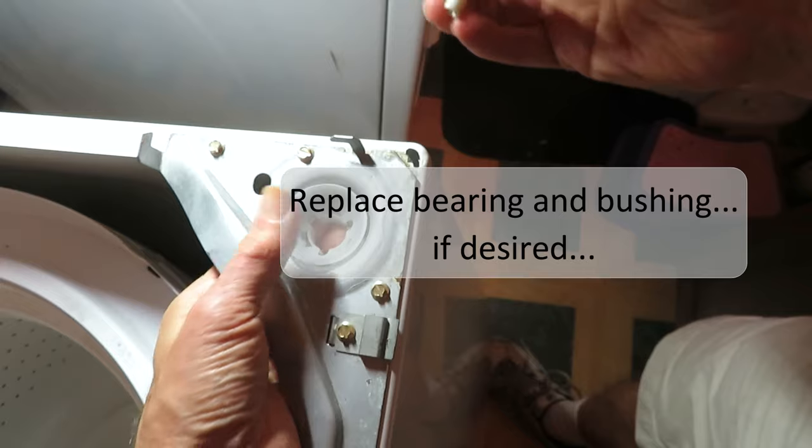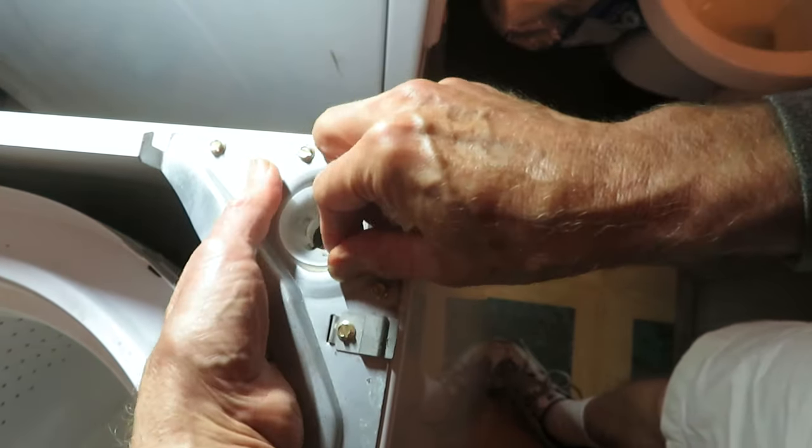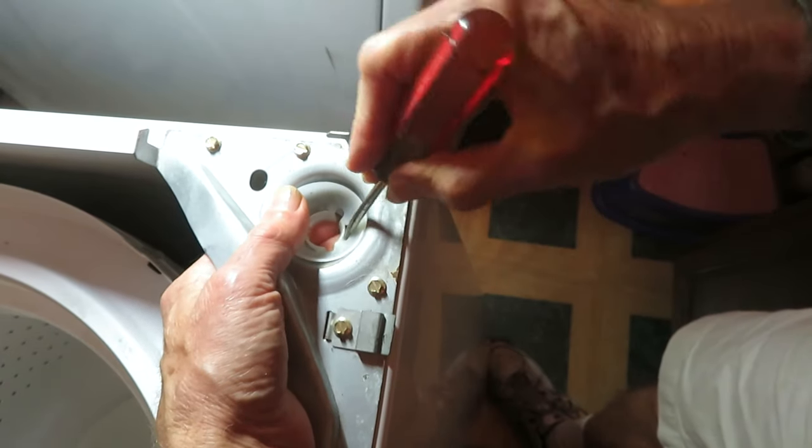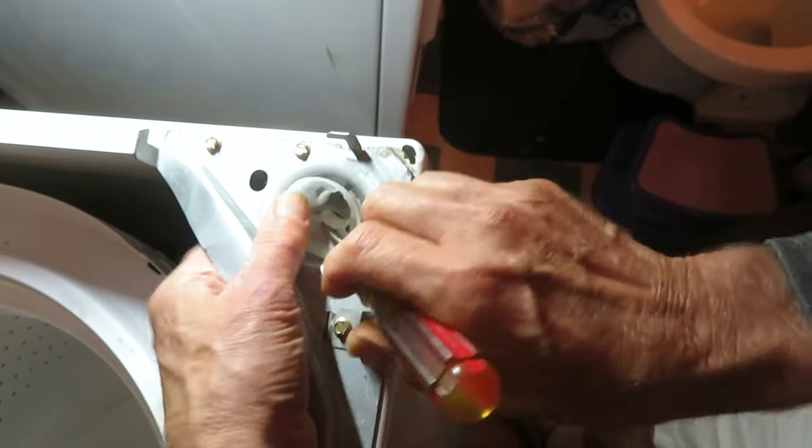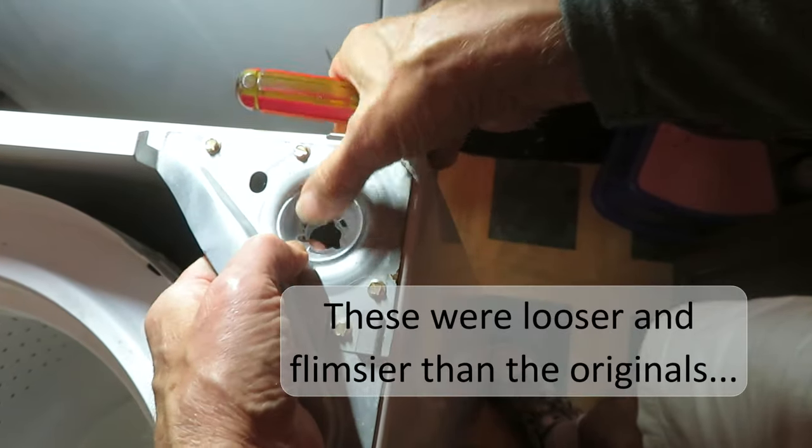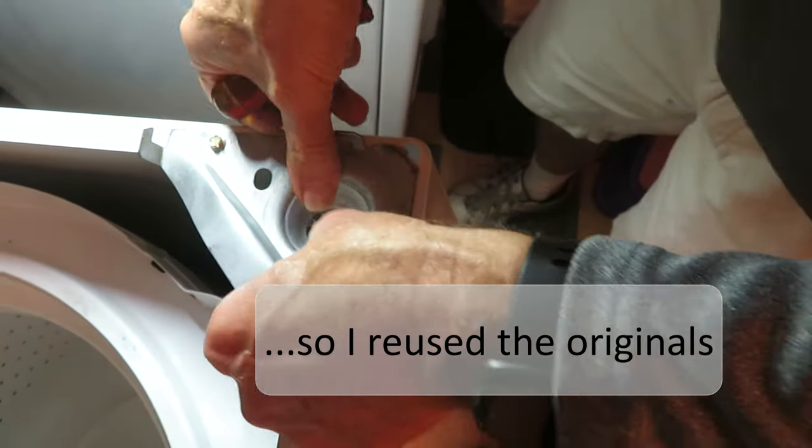Now the replacement kit will come with new bearings and bushings. I checked it out and I found that the old ones were in good shape yet. I'm taking them out right now. I'm just using a screwdriver. And then when I put the new ones in I found that they were kind of sloppy, looser, and I just preferred the originals so I stayed with them.